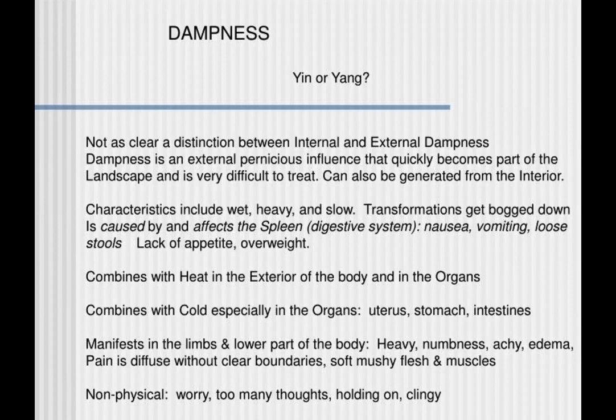Dampness combines with heat in the exterior of the body and in the organs. It also combines with cold, especially in the organs like the uterus, stomach, and intestines, and manifests in the limbs and lower part of the body as heaviness, numbness, achiness, and edema. Pain is diffused without clear boundaries, and there is softness in the muscle flesh. Non-physical manifestations include too many thoughts, holding on, and being clingy.